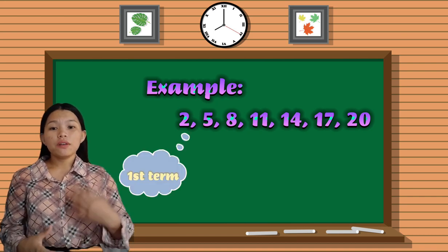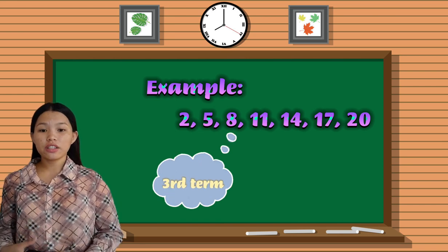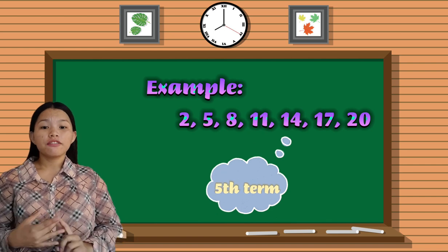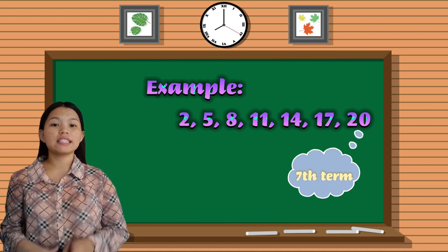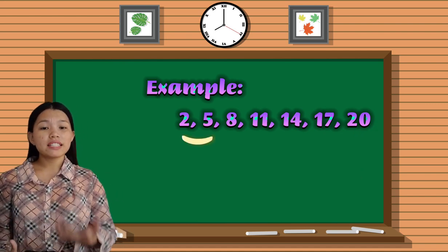So 2 is the first term, 5 is the second term, 8 is the third term, 11 is the fourth term, 14 is the fifth term, 17 is the sixth term, and 20 is the seventh term.